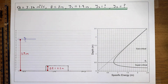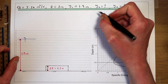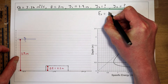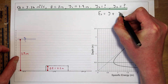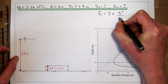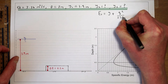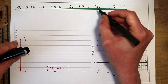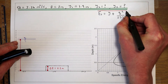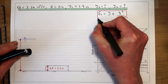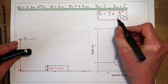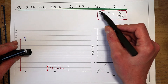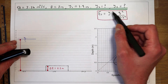The things we need to think about first of all: what is the relationship between specific energy in our flow and flow depth? That relationship is given as the flow depth plus the flow rate per metre width squared, over 2 times gravity times the flow depth squared. This is the relationship between energy and flow depth.